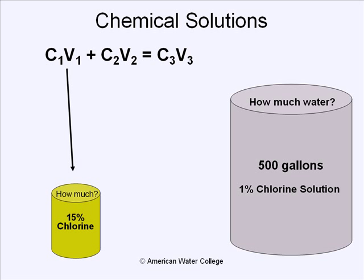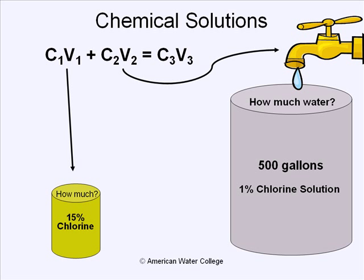The volume of solution 1 is currently unknown. Solution 2 is the water we add to the 500-gallon tank, and solution 3 is the final 500 gallons of the 1% chlorine solution. Since water has a zero concentration of chlorine — for the purposes of this problem, tap water is assumed to have no chlorine — its concentration is zero.